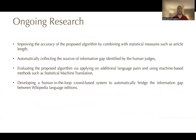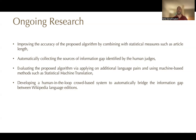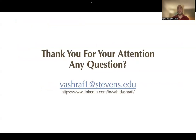Our future research is focused on improving the accuracy of the proposed algorithm by combining it with statistical measures such as article lengths, automatically collecting sources of information gap identified by human judges, evaluating the algorithm on additional language pairs using machine-based methods such as SMT, and developing a human-in-the-loop crowd-based system to automatically bridge the information gap between Wikipedia language editions. Thank you so much for your attention.